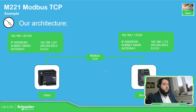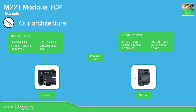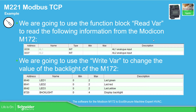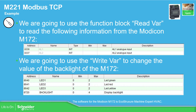The idea for this video is to communicate the Modicon M221 with another device. In our case, we're going to use the Modicon M172 via Modbus TCP. The M221 is going to be the client and the M172 will be the server. From the other PLC, this is exactly the same as we have done with Modbus serial, but instead we're going to use Modbus TCP. We're going to read the analog inputs and write into the backlight of the M172.